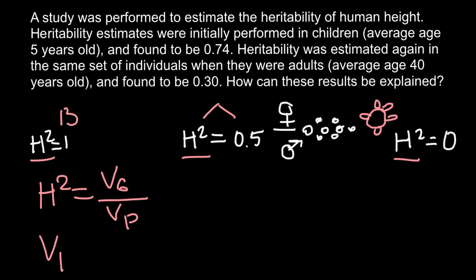As you remember, phenotype equals to variance genetic plus variance environmental. So phenotype is genetics plus environmental influence. So we also can expand this formula to variance genetic divided by variance genetic plus variance environmental. And now it is much easier to understand what I'm going to explain.